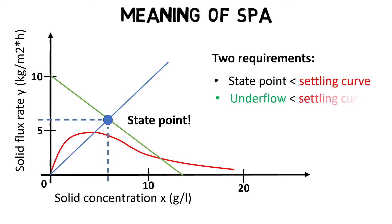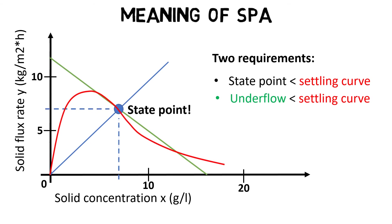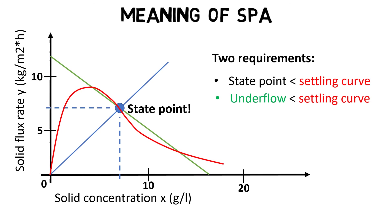Two, the complete underflow curve must stay underneath the settling curve. If not, the sludge does settle but it doesn't thicken fast enough, so that the sludge cannot be removed and the sludge blanket builds up in the clarifier tank.